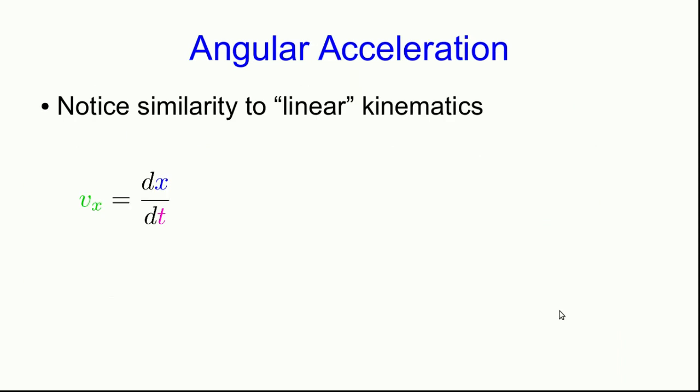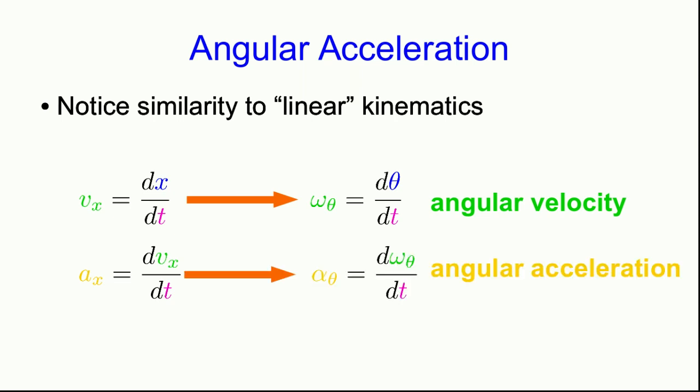Notice the similarity to linear kinematics. In the kinematics we learned at the very beginning of the course, we would have an x component of position, x, and we would describe its rate of change as the x component of velocity, vₓ = dx/dt. Now we have an angle θ, and we're describing its rate of change as the angular velocity ω = dθ/dt. We can continue that similarity, because we're frequently going to be interested in the angular acceleration α, the rate of change of the angular velocity, α = dω/dt.